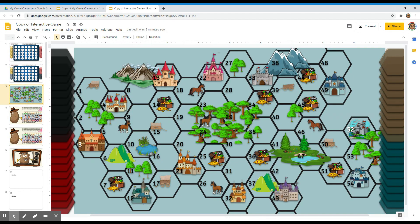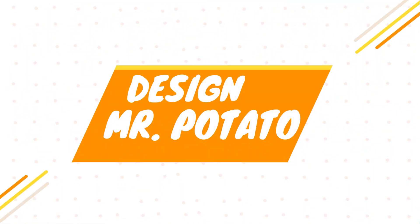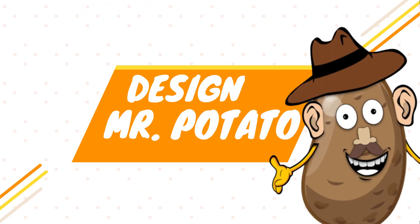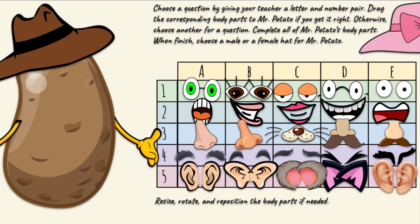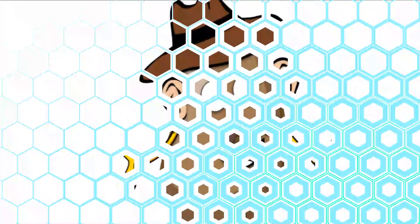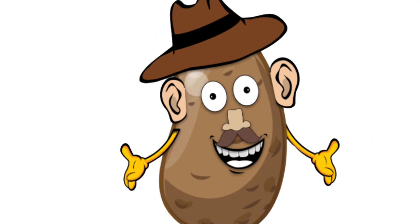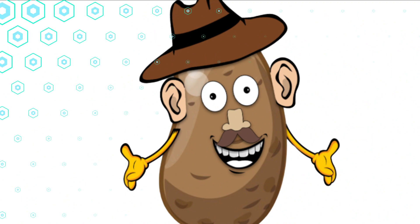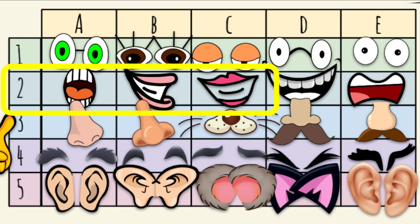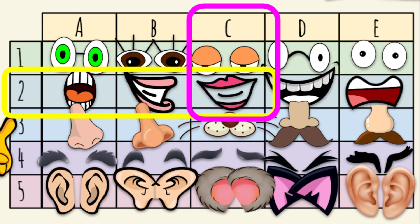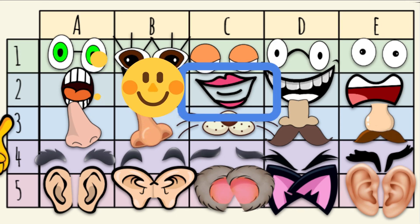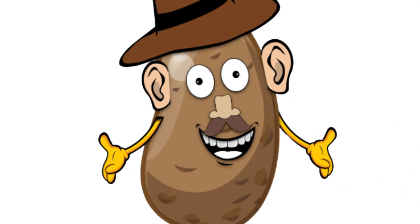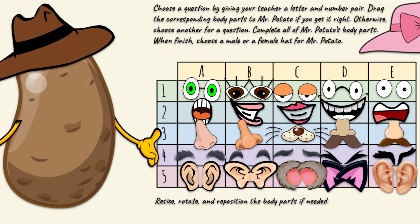Now for our last game: Design Mr. or Miss Potato. This game is more fun when played individually, so students can design their own Mr. or Miss Potato. Students choose a number and letter question combination from each row, and if they get it right, they get to drag the corresponding body parts for the answered question to Mr. Potato — otherwise, they choose another question.